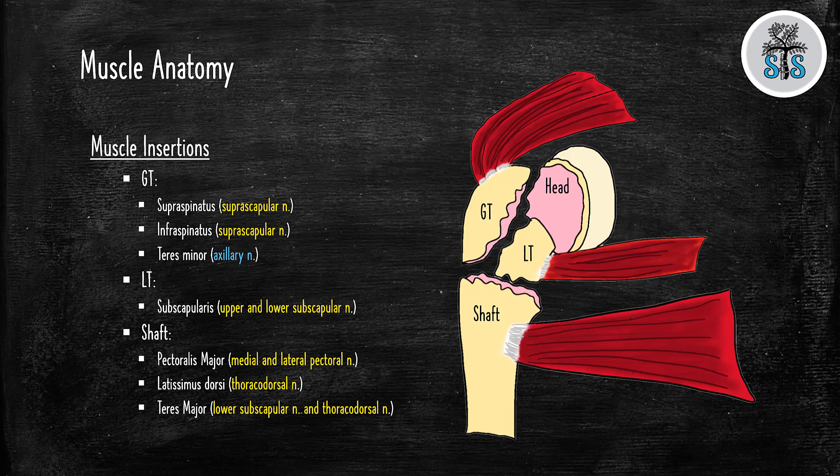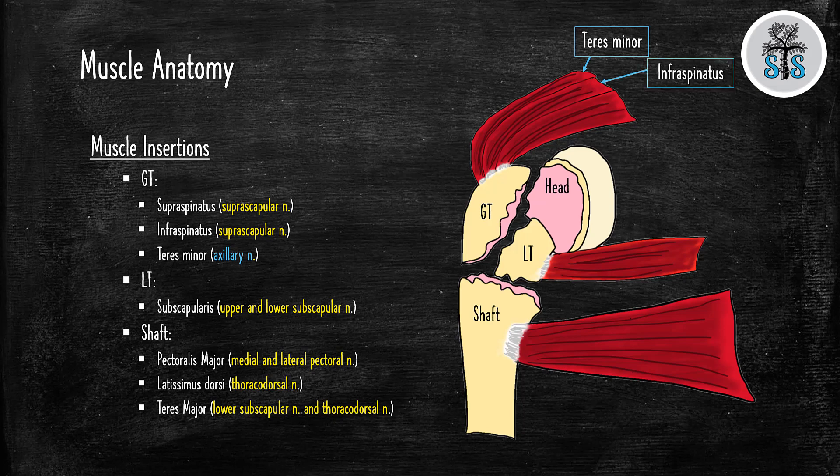Now let's go over some muscle anatomy. Knowing the muscle insertions on the proximal humerus and their innervations is very high yield. The muscles that insert on the greater tuberosity are the teres minor, the infraspinatus, and the supraspinatus. The supraspinatus and the infraspinatus are both innervated by the suprascapular nerve, where the teres minor is actually innervated by a branch of the axillary nerve.